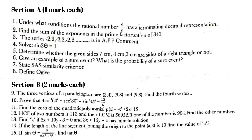Then section B is of 14 marks and each question carries 2 marks each. Now, the 3 vertices of a parallelogram are (3, 4), (3, 8) and (9, 8) — find the 4th vertex. Then prove that 4 cot²60° + 6 sin²30° − sin²45° = 13/6.